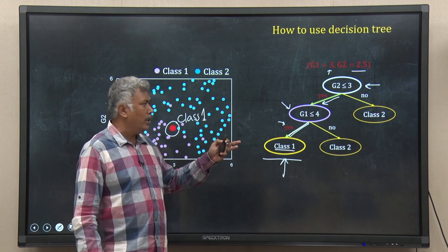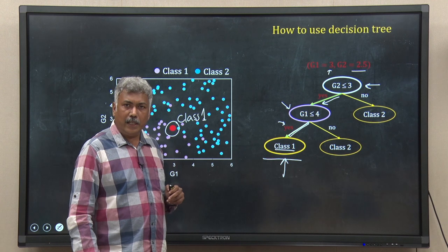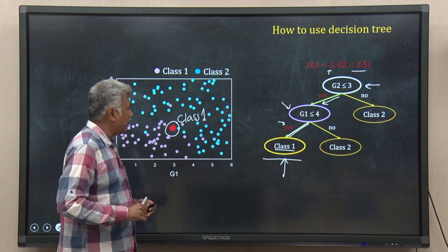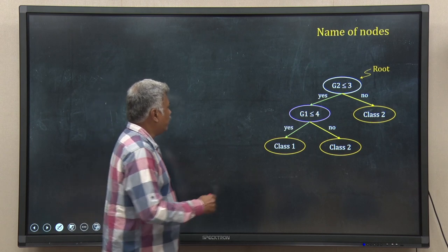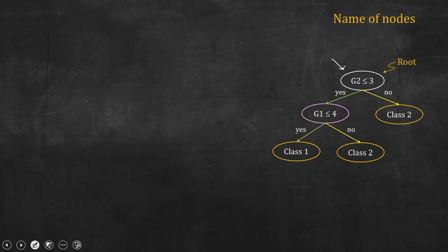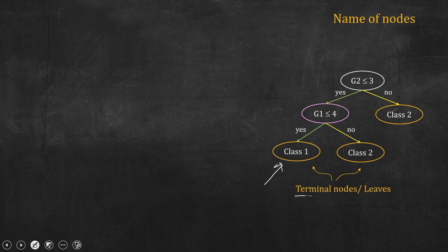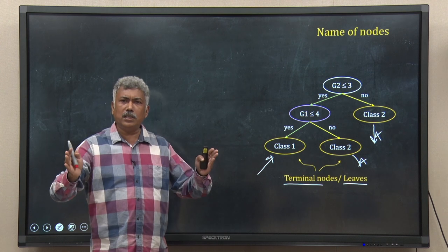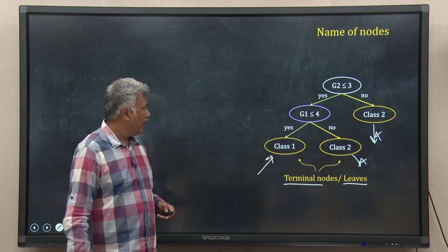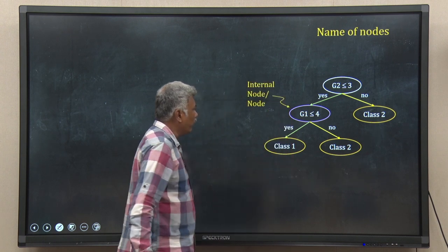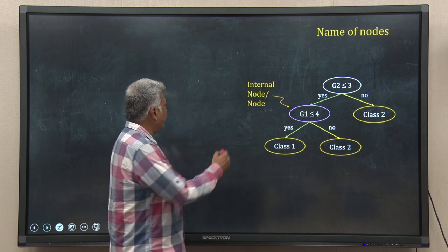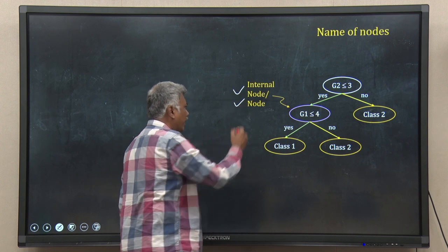Now I will move into how we build this decision tree classifier. Some technical terms to get acquainted with: the topmost node is called the root, whereas the lowest nodes where we have already made the decision about the class are called terminal nodes or leaves — from these there are no more arrows. The in-between nodes where we ask questions are called internal nodes.